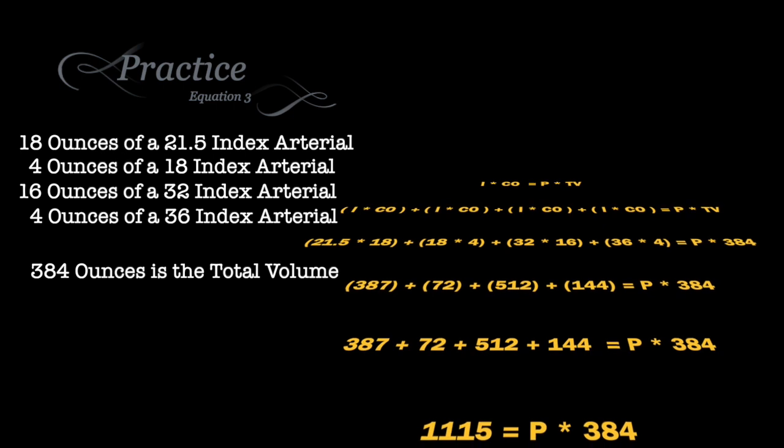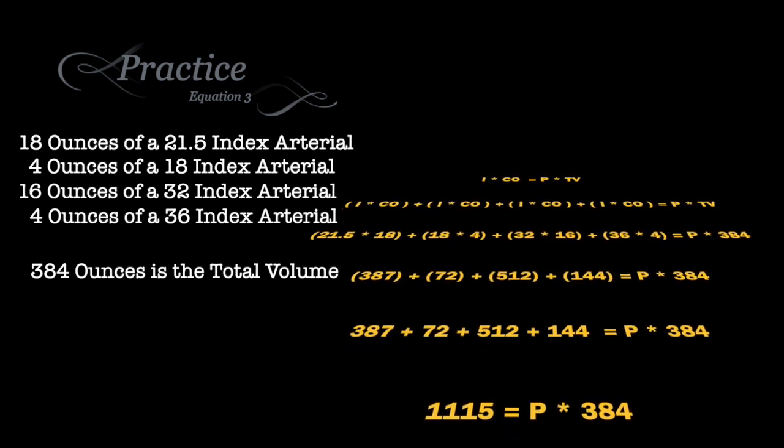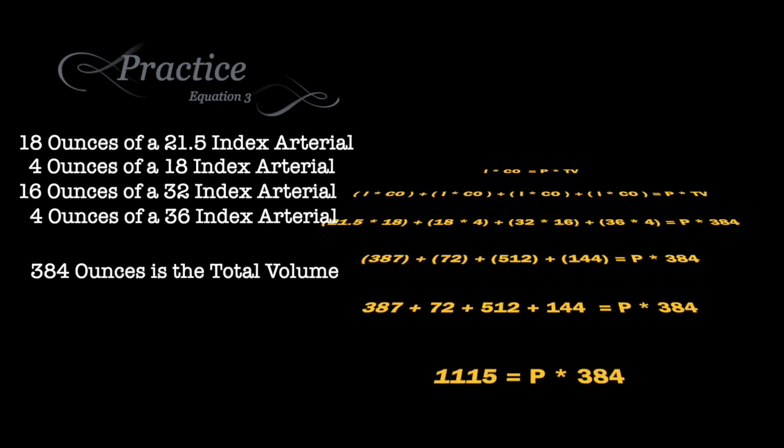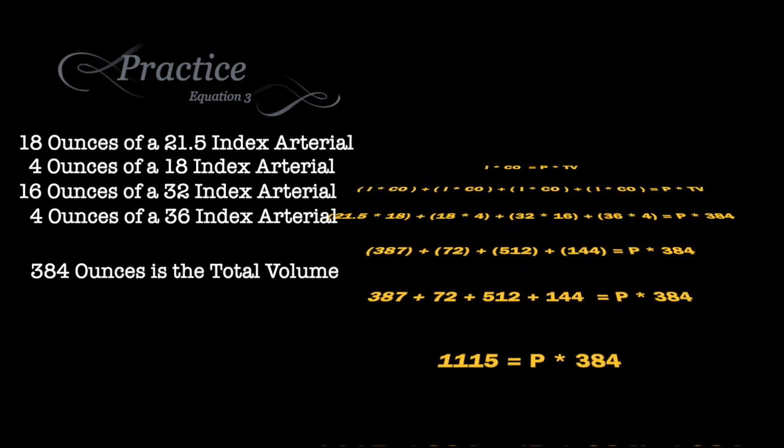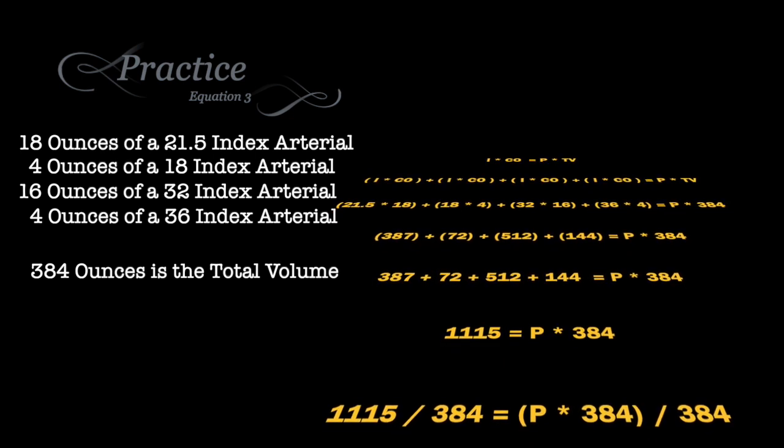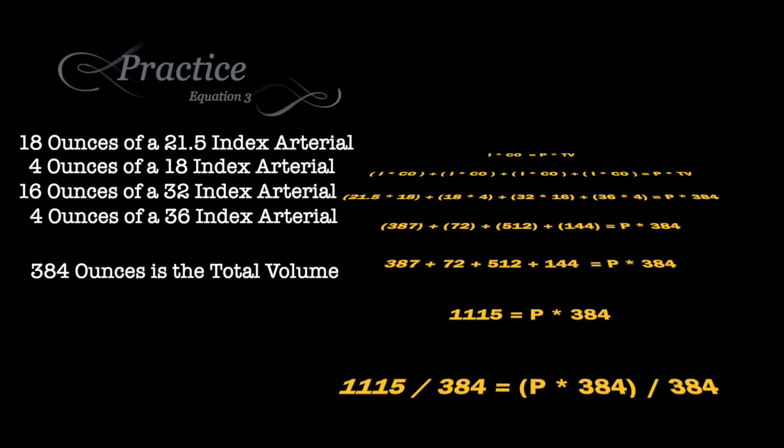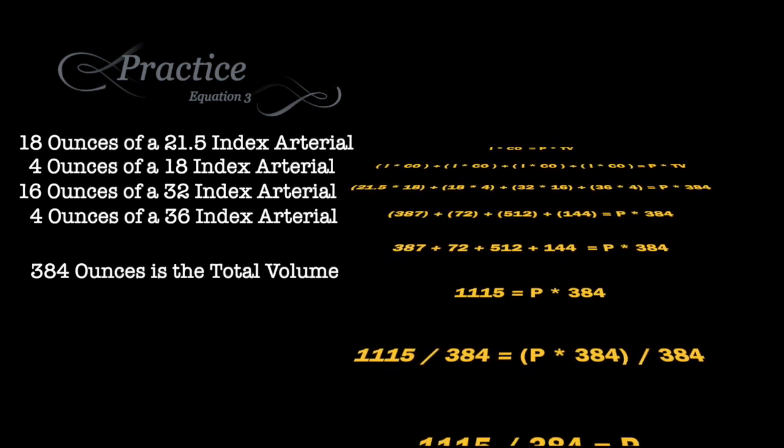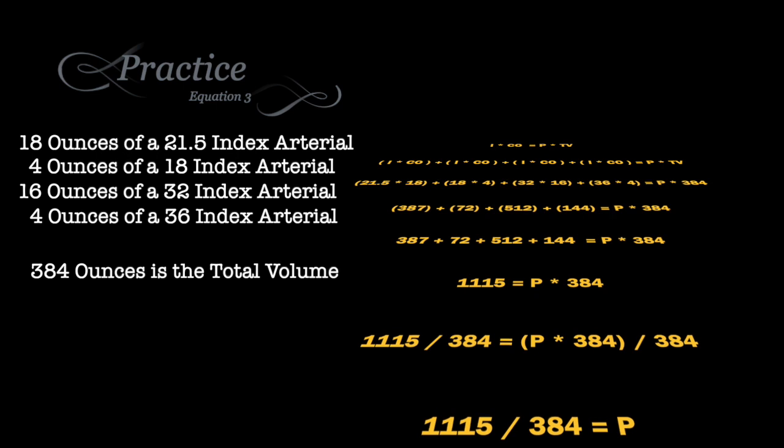We're going to multiply each bracket and come up with an answer. So 387, 72 for the second chemical, 512 for the third, and 144 for the fourth chemical. By adding these various chemicals together, we get a total of 1,115.